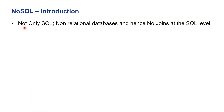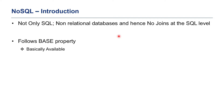NoSQL is not only SQL — it refers to non-relational databases, and hence there are no joins supported at the SQL level. It follows BASE property: basically available, soft state, and eventually consistent. There are two kinds of consistency in databases: one is strongly consistent database and another is eventually consistent reads and writes.